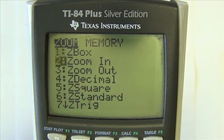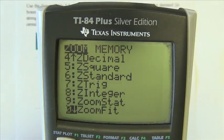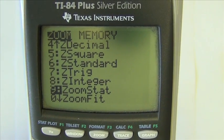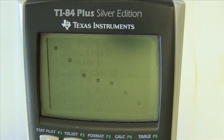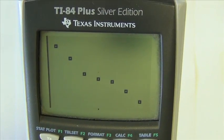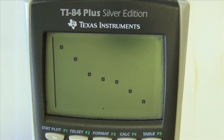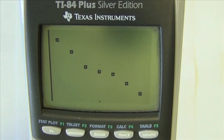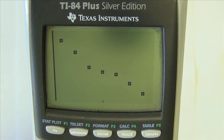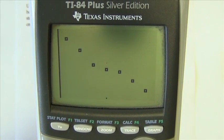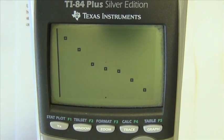So I'm going to hit the zoom button, and I'm going to scroll down to zoom number 9 - it's zoom STAT, so it should zoom around the data points I've typed in. And now we can see our points. We can see that they are associated or correlated linearly, and it looks like a fairly strong negative correlation.